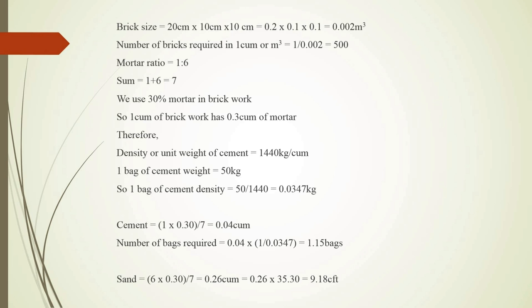Before calculating cement, we need to know the density or unit weight of cement, which is 1440 kg per cubic meter. One bag of cement weighs 50 kg. So 1 bag of cement volume equals 50 divided by 1440, which equals 0.0347 cubic meters.